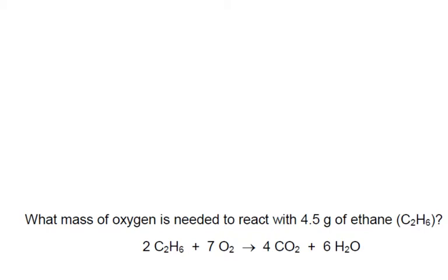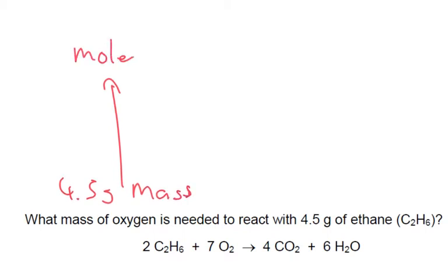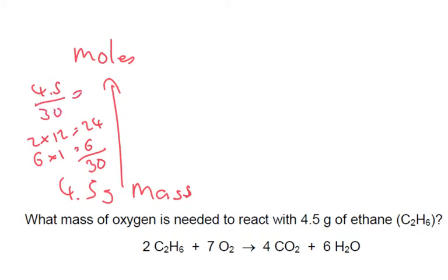What mass of oxygen is needed to react with 4.5 grams of ethane? So we've got 4.5 grams — that's our mass. How many moles do we have? Ethane has 2 carbons and 6 hydrogens: 2 times 12 is 24, plus 6 times 1 is 6, giving a molar mass of 30. So 4.5 divided by 30 gives us 0.15 moles.